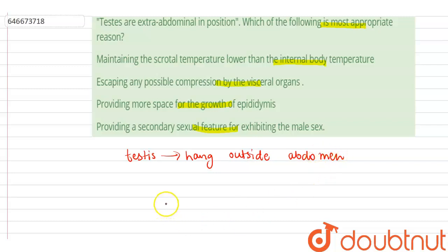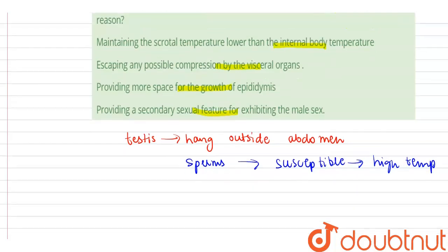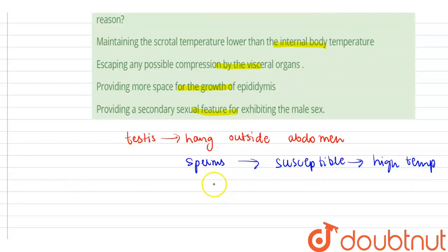And this is important because the sperms in the testes, which are the male gametes, are susceptible to high temperature. They are sensitive to high temperature and can easily die due to high temperature.